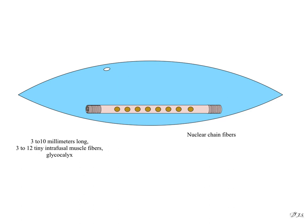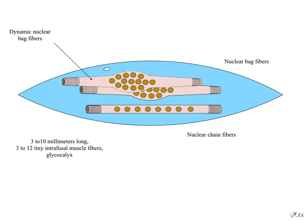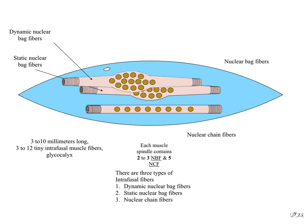This capsule has two types of intrafusal fibers: the nuclear chain fibers and nuclear bag fibers. Nuclear bag fibers are of two types: dynamic nuclear bag fibers and static nuclear bag fibers. Each muscle spindle contains 2 to 3 nuclear bag fibers and 5 nuclear chain fibers. There are thus three types of intrafusal fibers: dynamic nuclear bag fibers, static nuclear bag fibers, and nuclear chain fibers.